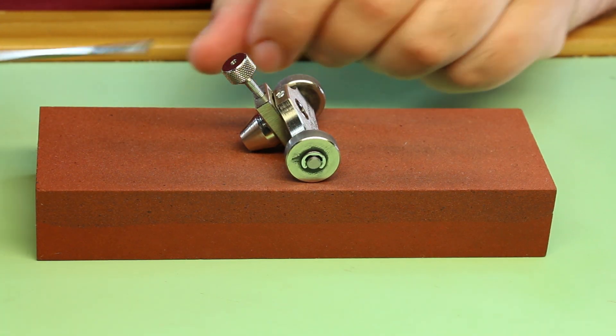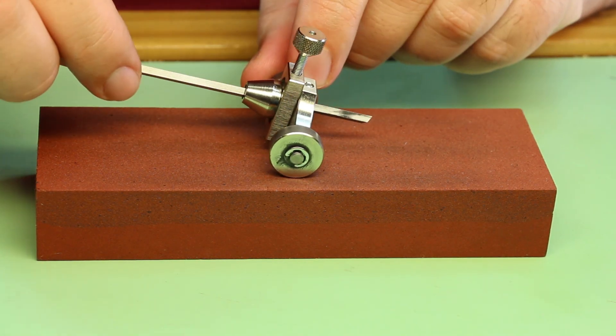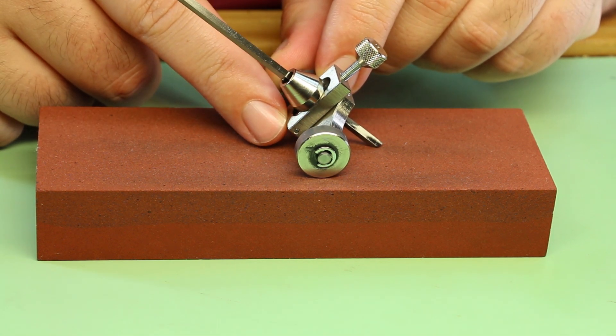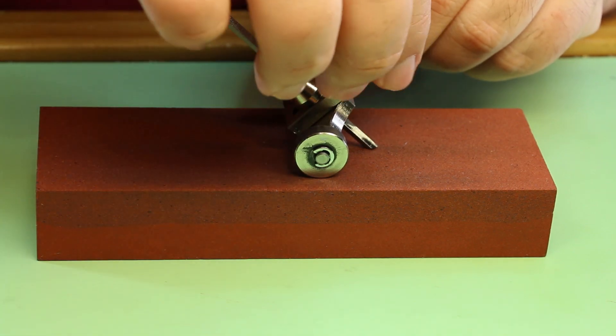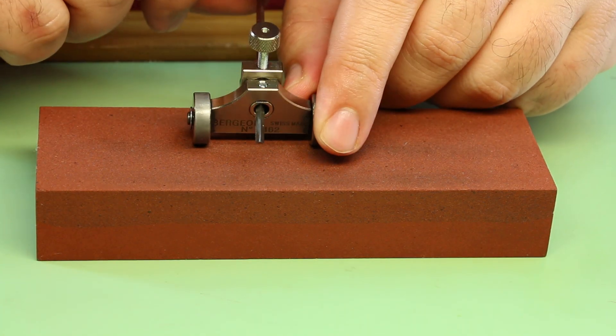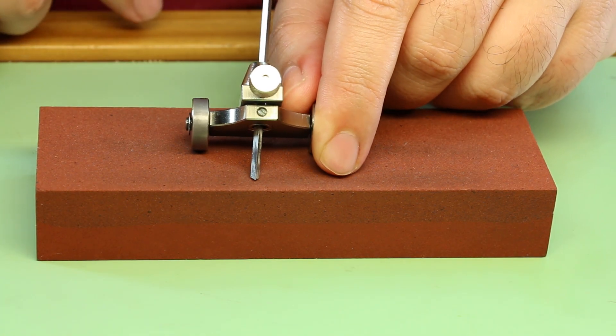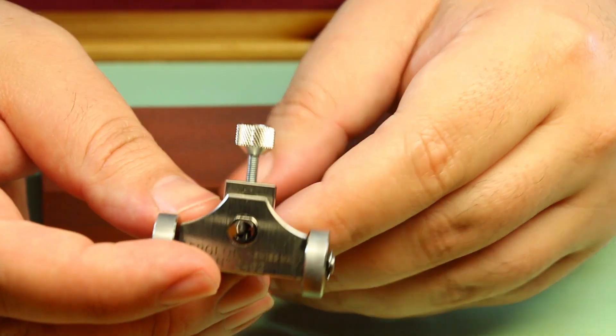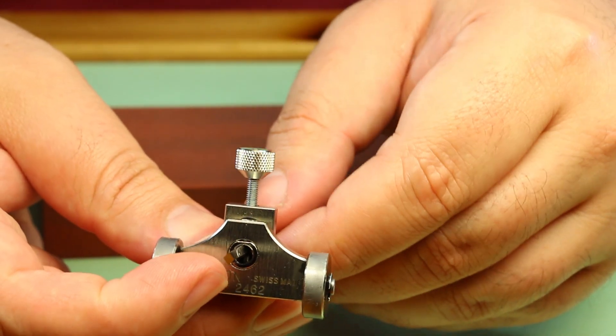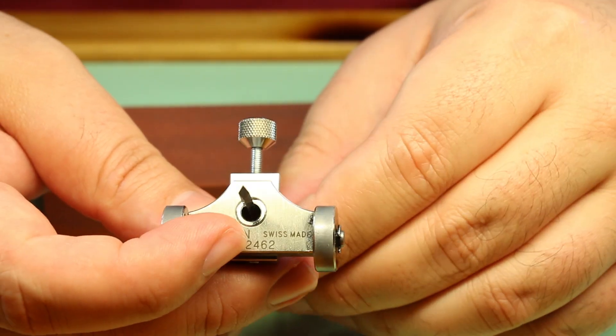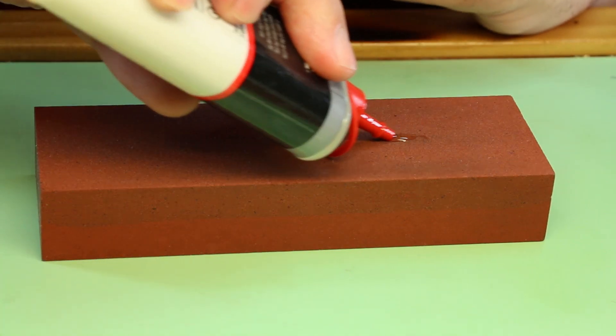To sharpen the graver, we insert it through the back of the Bergeon tool holder and set it to our desired angle. Lock it down gently with the thumb screw. Then we're going to ensure that our graver is actually perpendicular to the tool. As you can see it's on a slight angle. So next we look at the hole that we just inserted through the tool holder and ensure that the graver sits nice and straight.